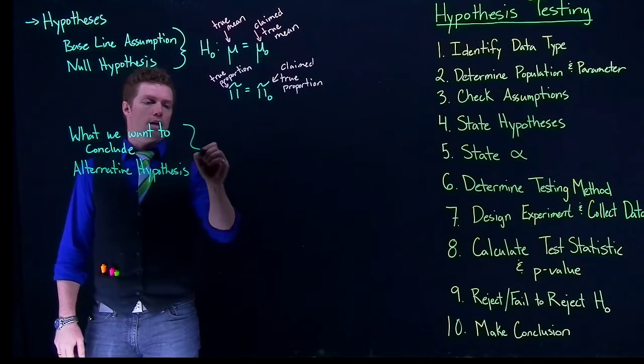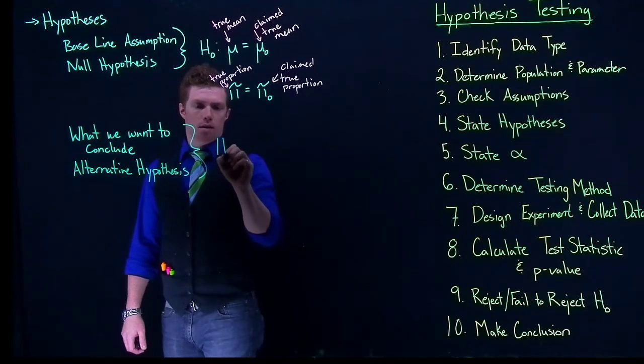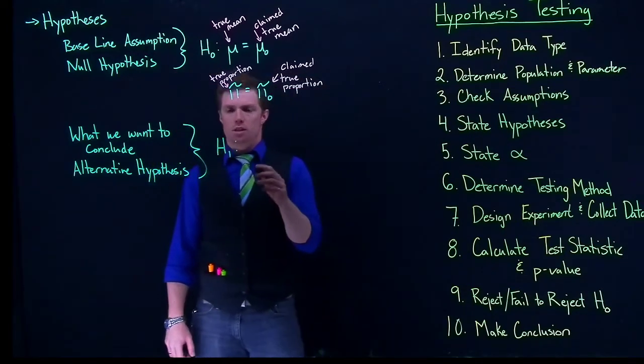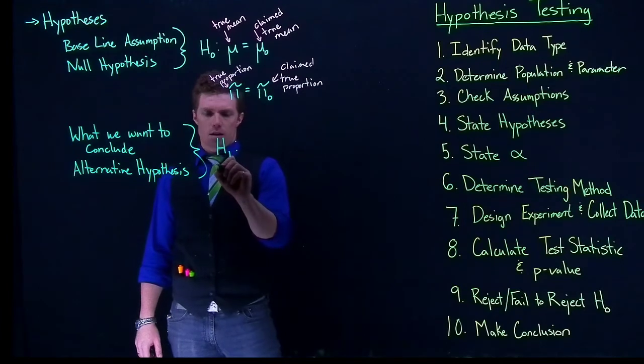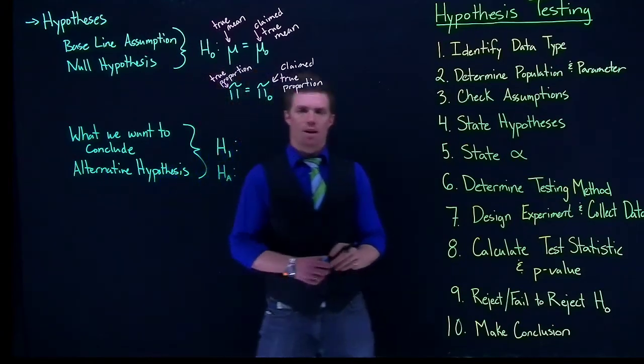And these guys collapse down into what we call H1. Now in literature and textbooks, especially in social sciences, you will also see this as H sub A. This is the alternative hypothesis.